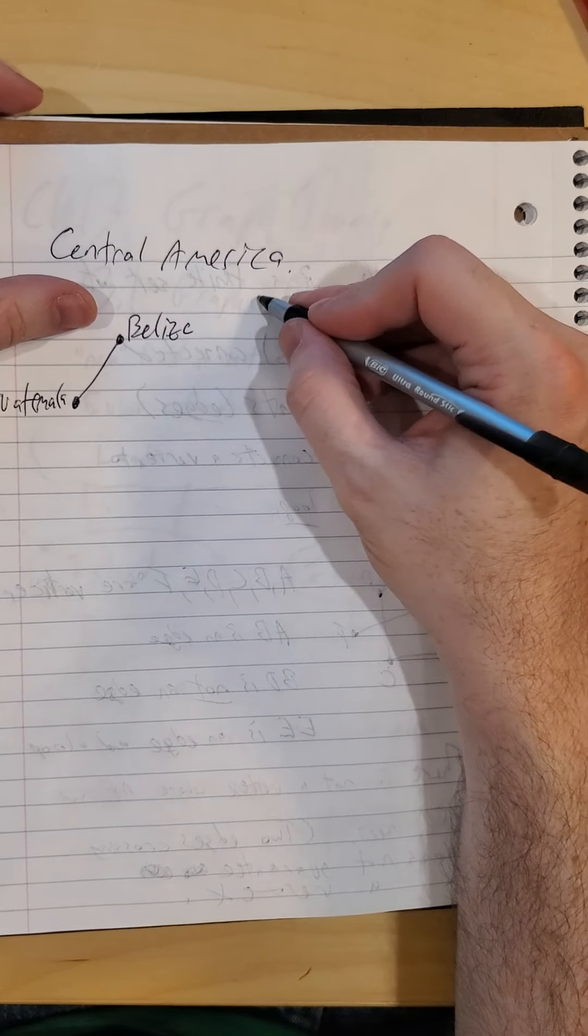Now we have adjacent to Guatemala, we have El Salvador. They do share a border. But if you look at a map, you'll see Belize and El Salvador do not share a border. So I'm not going to draw an edge connecting those two. Similarly for Honduras. Honduras is adjacent to Guatemala. It is adjacent to El Salvador. It is not adjacent to Belize. I can't walk from Honduras to Belize without going through another country, specifically Guatemala in this case.